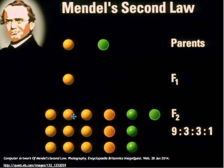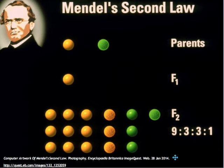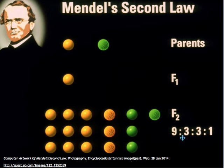Mendel crossed thousands of peas and his ratio did not exactly match the 9:3:3:1, which is purely a prediction based on probabilities. But his data was an extremely close match. Since the release and acceptance of his results, some statisticians have questioned that given the size of his samples, his results were too good to be true, with statistical tests showing a very close match to the 9:3:3:1 ratio. Some propose that Mendel, given the state of the scientific community in the 19th century, repeated his experiments until he got a ratio that was a very good match with his hypothesis. And others have made the claim that he falsified his data to support his hypothesis.